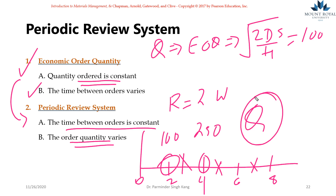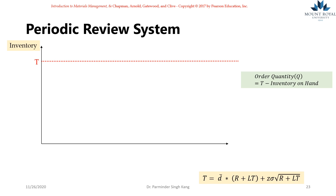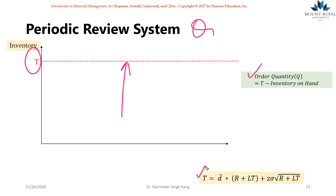Let's look at one graphical representation of the periodic review system to see how the entire system works. Before we go through the graphical example, let's get familiar with some terms. Starting with T, which is the maximum inventory — once you receive from your supplier the quantity Q, you expect your inventories to go to a maximum level.